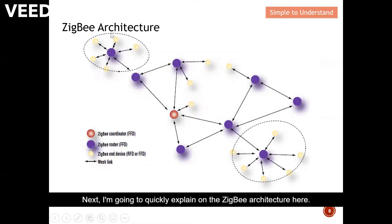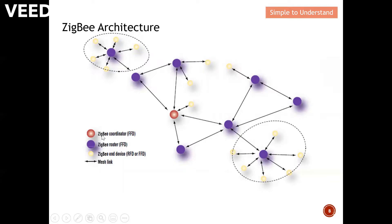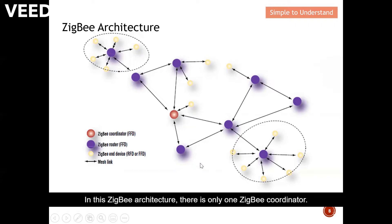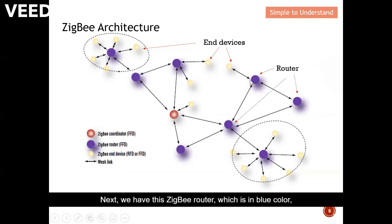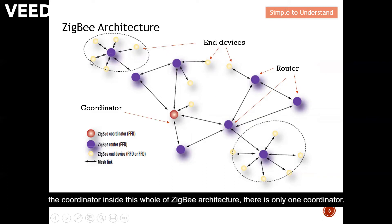Next, the ZigBee architecture. From the diagram, ZigBee has three different device classes. First, the ZigBee Coordinator — there is only one coordinator in the entire ZigBee architecture. Second, the ZigBee Router, shown in blue — someone talks to this device, hence it is classified as a router. Third, the ZigBee End Device — no one talks to the end device; it is at the leaf of the network. The topology and further details of this architecture will be discussed in the next video.